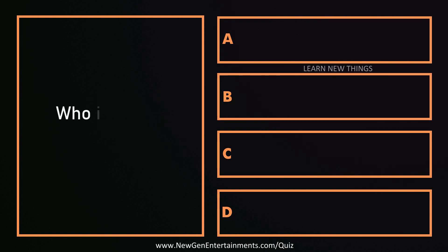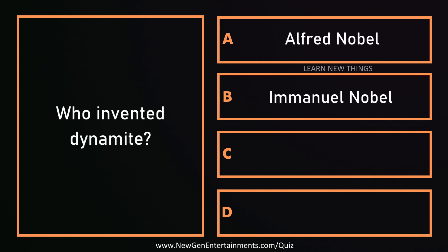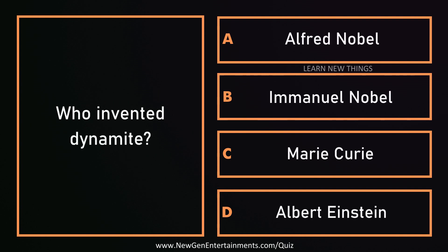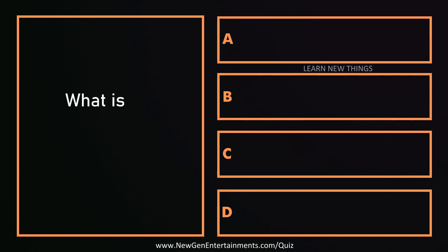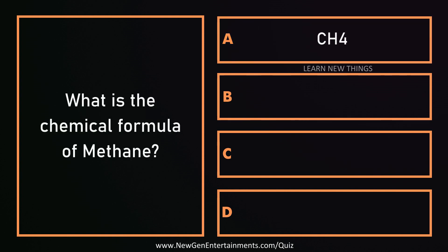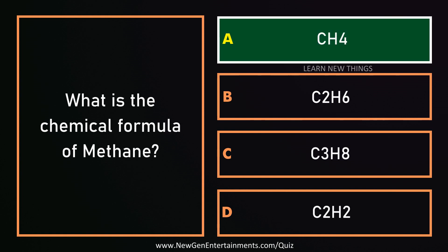Who invented dynamite? Alfred Nobel. What is the chemical formula of methane? CH4.